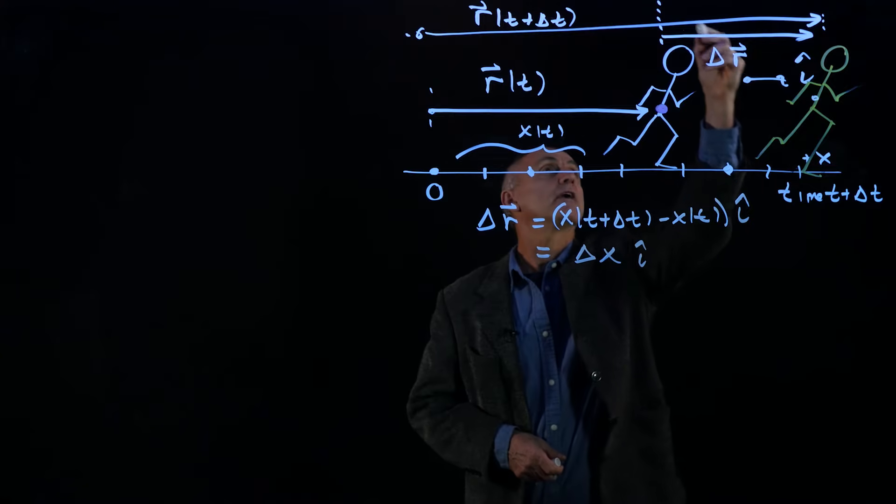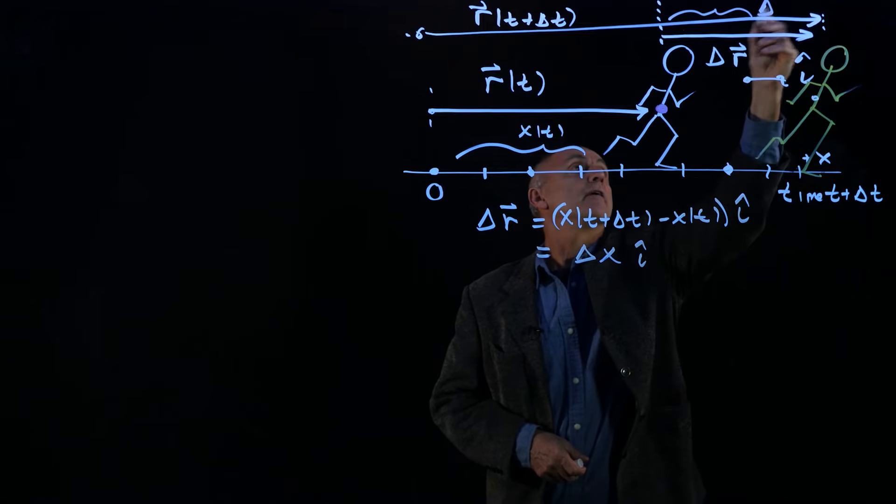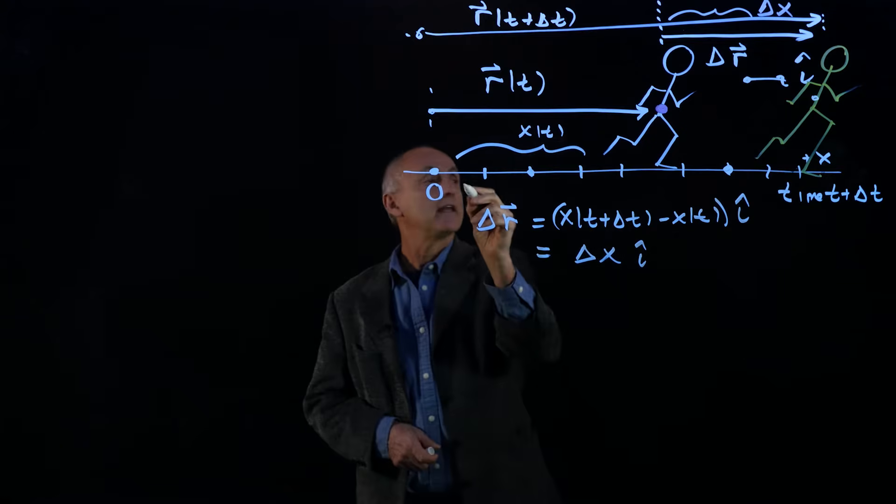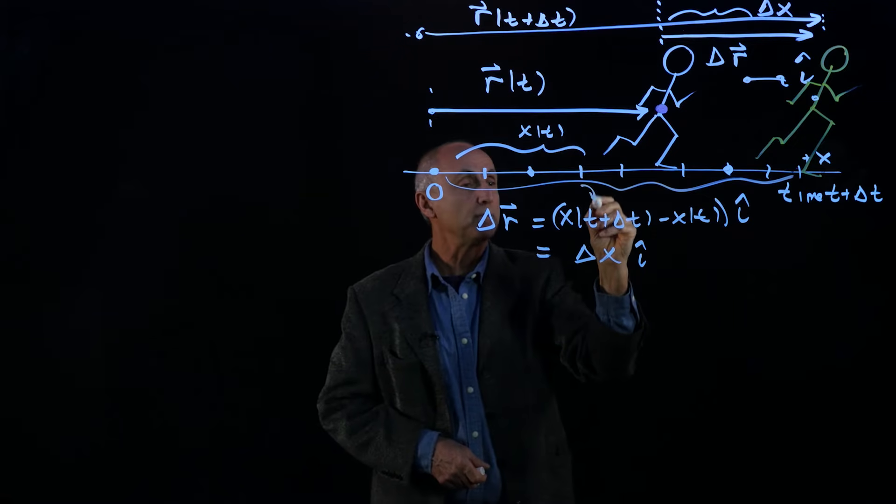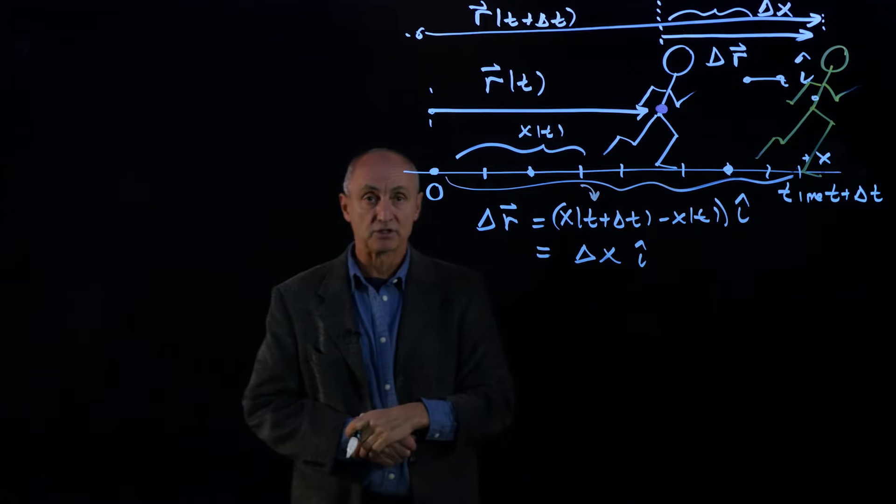Now let's just remind ourselves that this distance here, that's delta x. And this whole distance from here over to there, that's what we mean by x of t plus delta t.